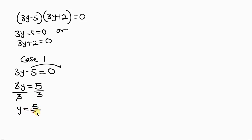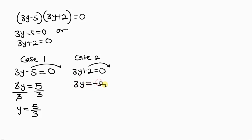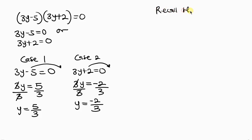Case 2: 3y + 2 = 0. Moving 2 to the right gives 3y = -2, and dividing both sides by 3 gives y = -2/3.